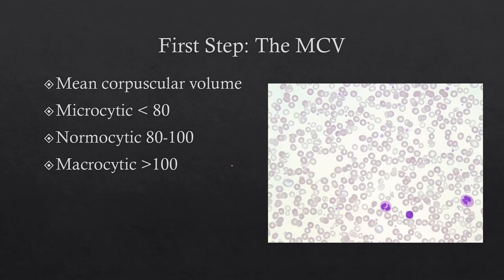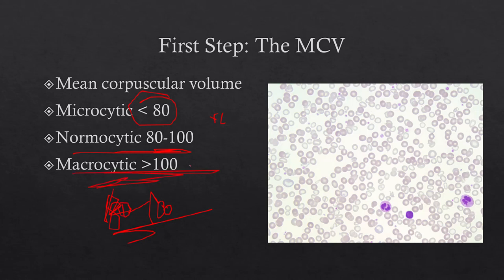The first step when you have a patient with a low hemoglobin is look at the MCV. What is the MCV? It stands for mean corpuscular volume — the volume of the red blood cell corpuscle. It's measured in femtoliters (fL). You should commit this to memory: 80 to 100 is considered a normal MCV. Under 80 is microcytic, 80 to 100 is normocytic, and over 100 is macrocytic.